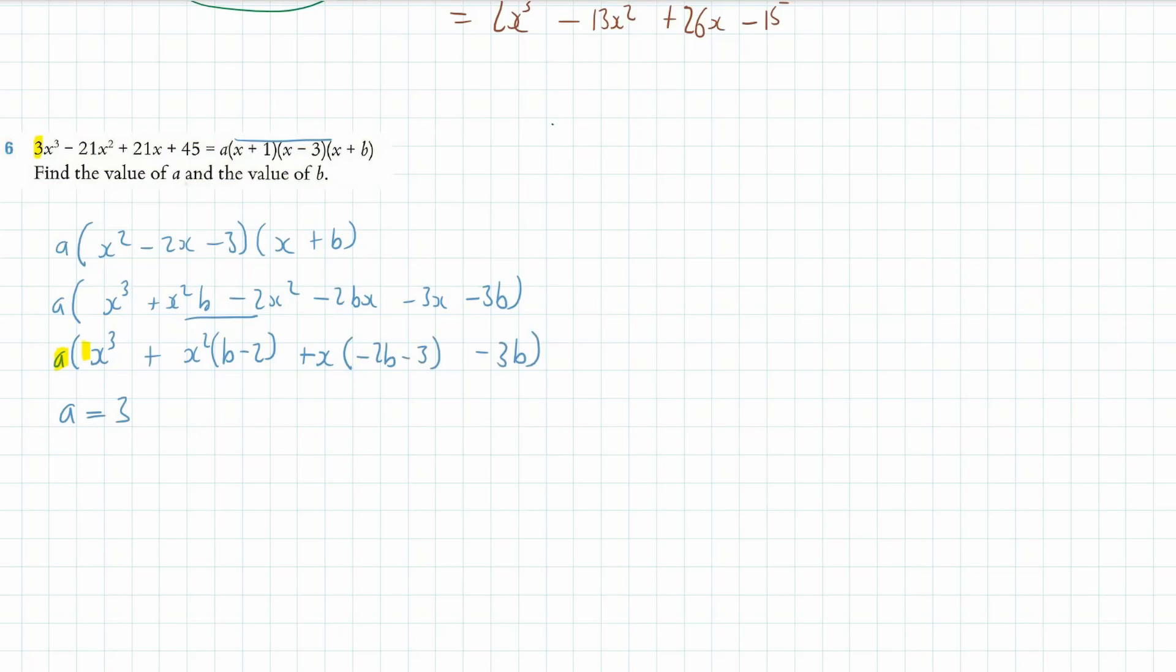Okay, and the last thing is that this value here, the 45, doesn't have any x with it, right? So we can ignore—straight away that's got an x, that's got an x in it, that's got an x—so we can ignore those terms. We're going to take this term here and we know that a multiplied by -3b should be equal to that 45. Now I know that a is 3, so -3(3)b = 45, which means -9b = 45, which means that b should be equal to negative 5.